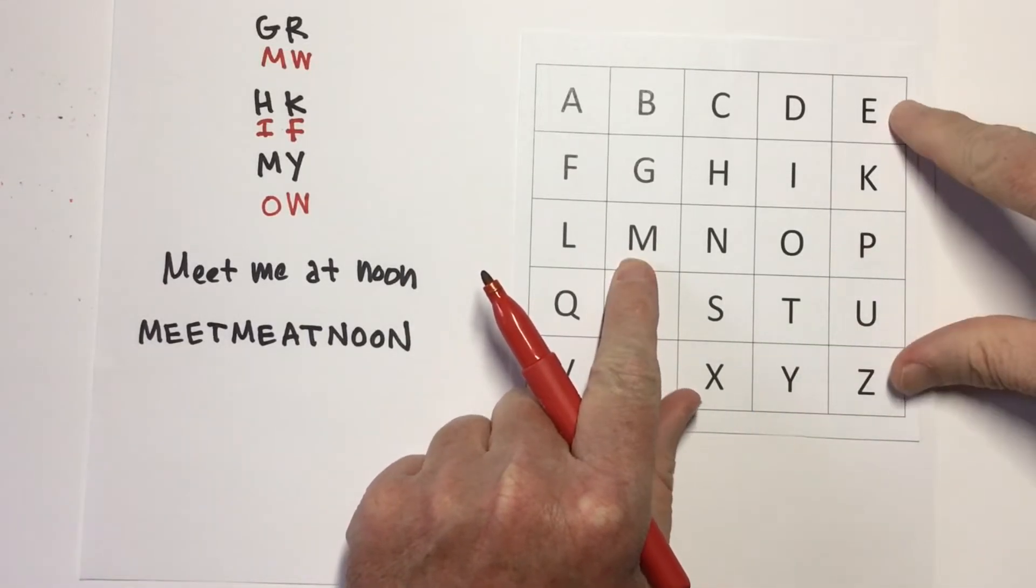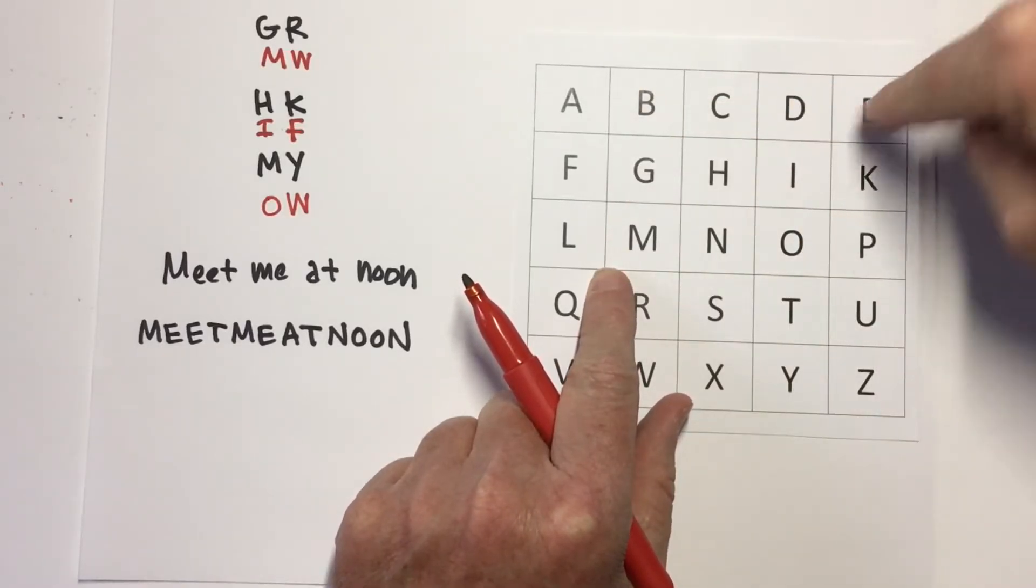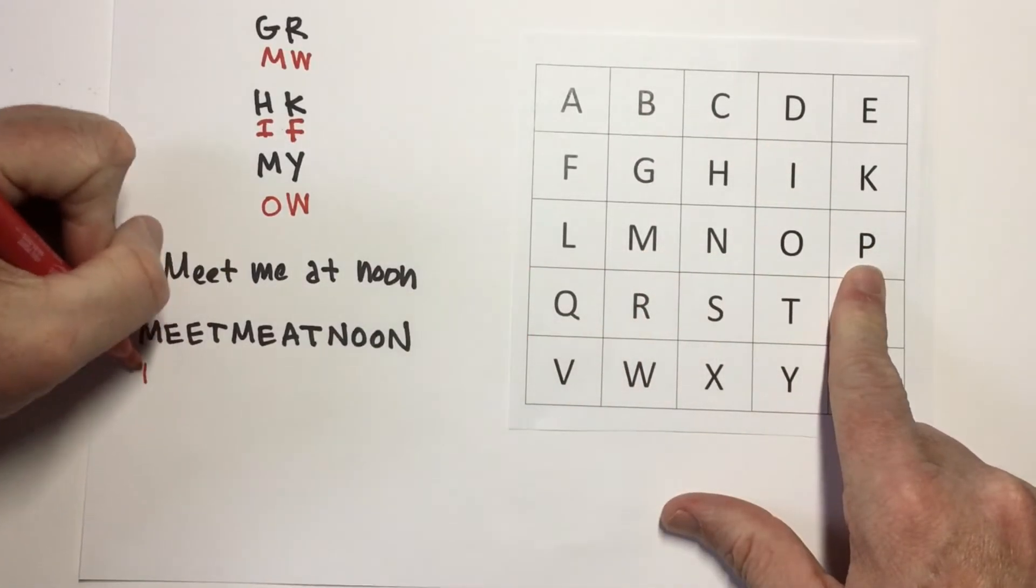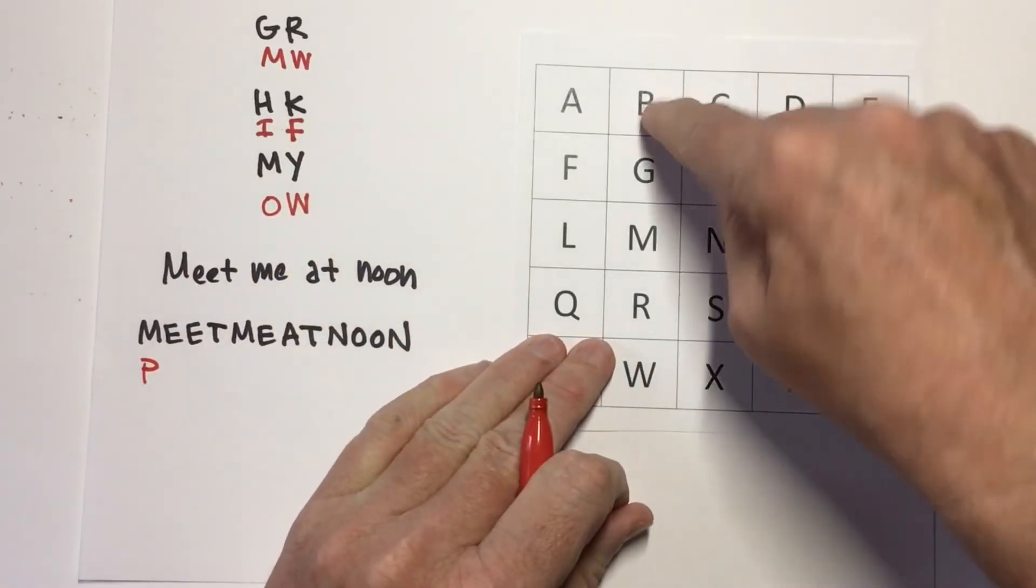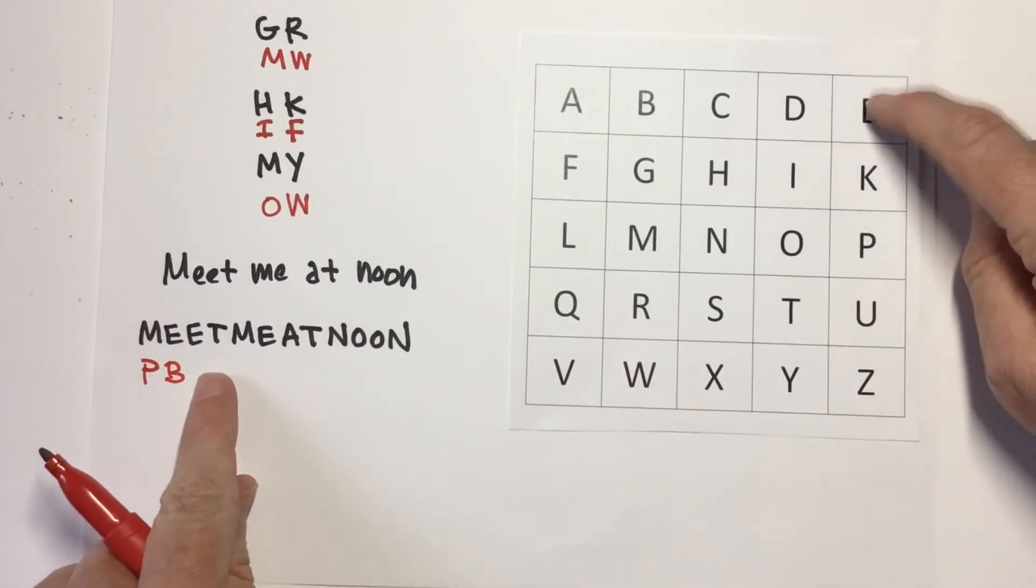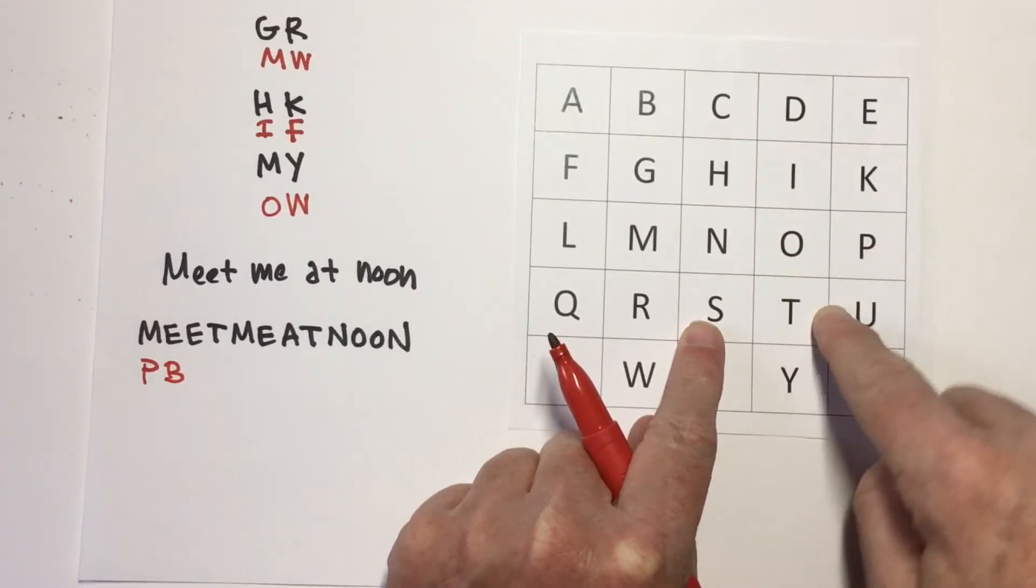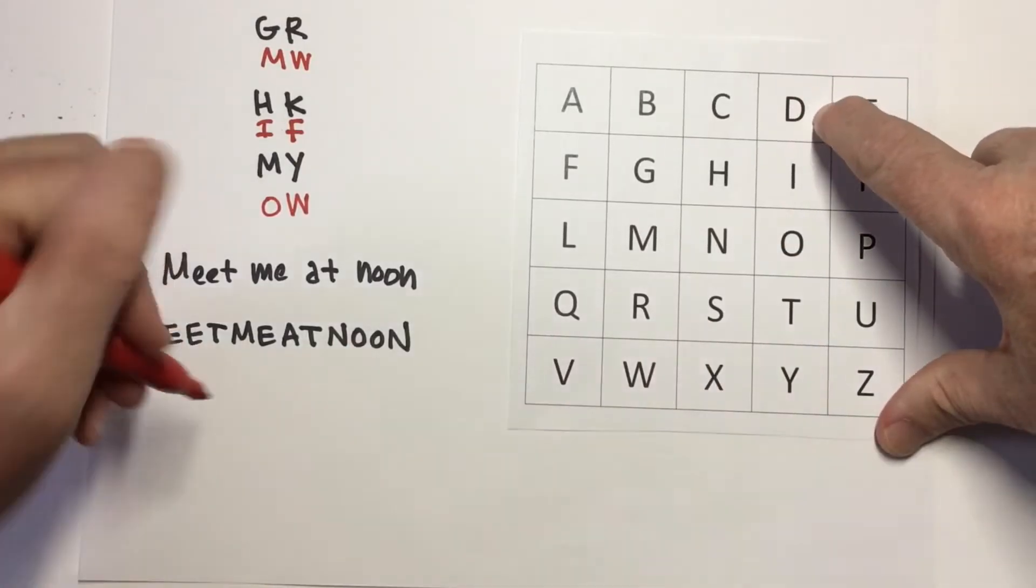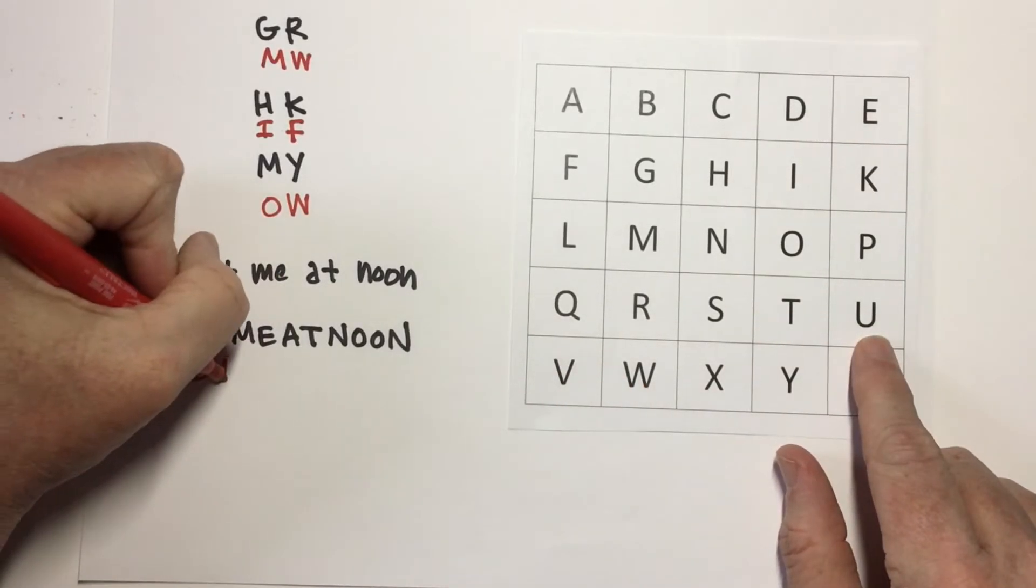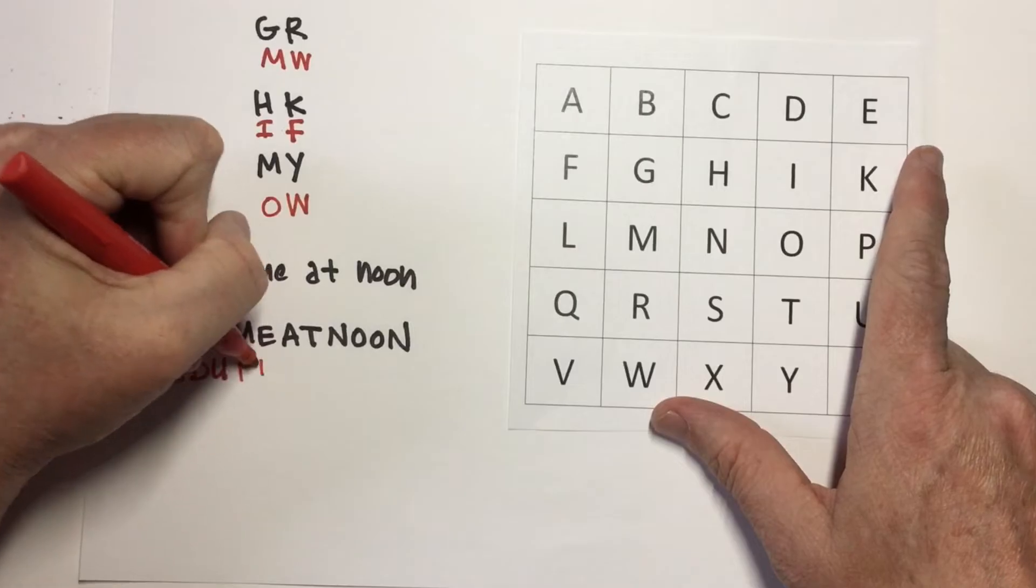And I see there's M, there's E. They form this box right here. So, that means that M... I'm going to use the letters in the opposite corners of the box. M becomes P, and E becomes B. Good. Now, I'm going to code the next two letters, E, T. There's E, there's T. It forms this box right here. So, E becomes D. And T becomes U.